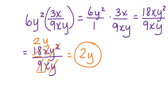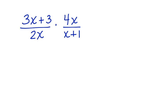Let's look at one more. Here we have 3x plus 3 divided by 2x times 4x over x plus 1.